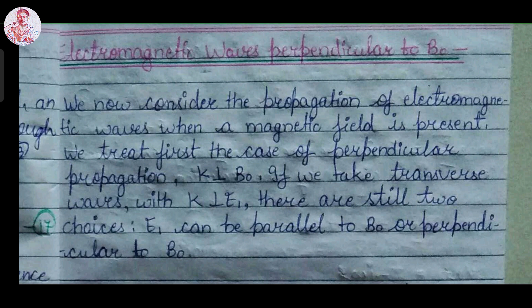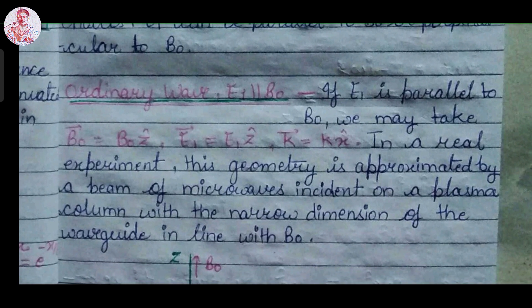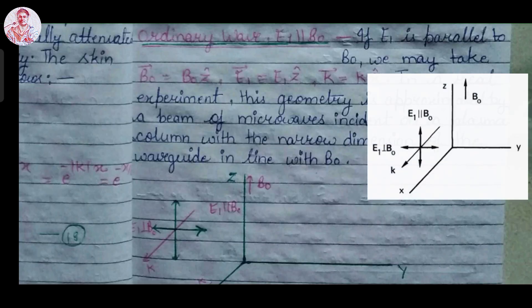We treat first the case where the propagation is perpendicular to the magnetic field — propagation vector k is perpendicular to magnetic field vector B. For a transverse wave with propagation vector k perpendicular to electric field vector E, there are still two cases: E can be parallel to B, or perpendicular to B. In this video we discuss the ordinary wave, where electric field vector E is parallel to magnetic field vector B₀.